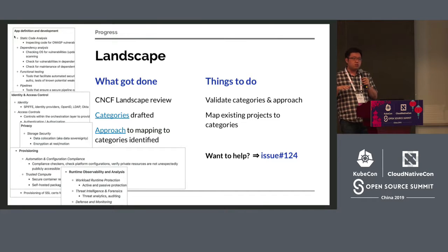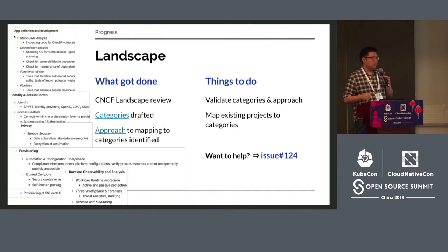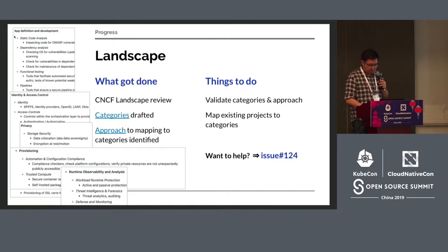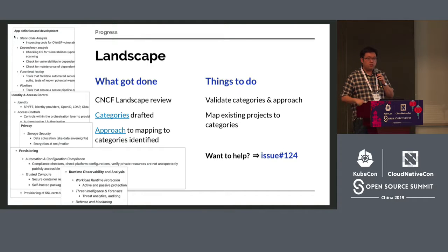What sets us apart from the general CNCF landscape is that the scope of the CNCF landscape is targeted at CNCF projects themselves. But with security, a lot of the security projects used in production are generic security solutions — like key management systems like Vault, or cgroups and namespaces in the Linux kernel — which are not necessarily cloud native but are still important in the security ecosystem. We have a draft of all these things moving forward, and if you're interested in helping, all the issues are on the site.